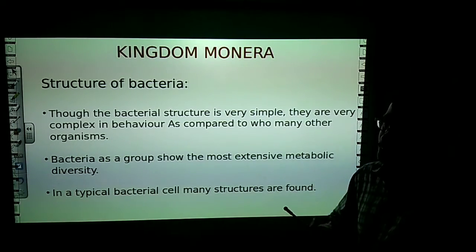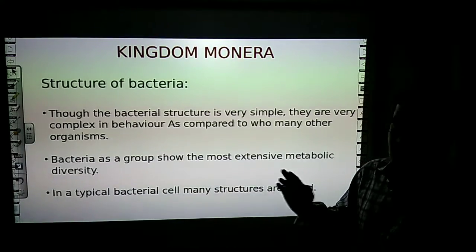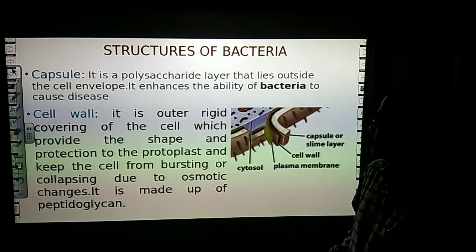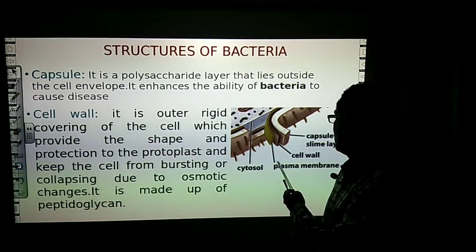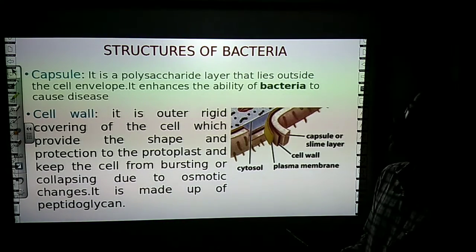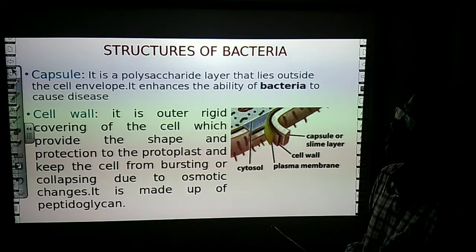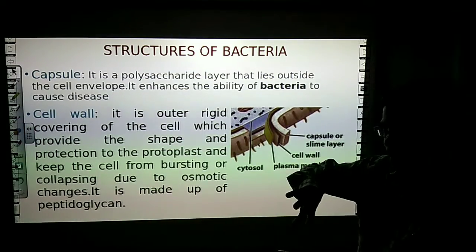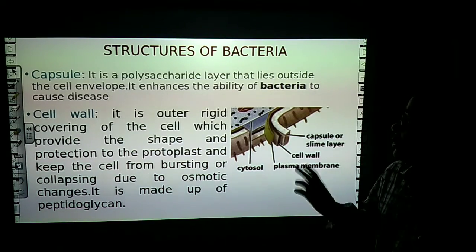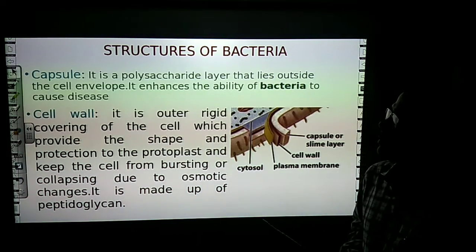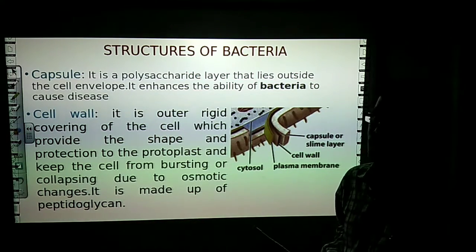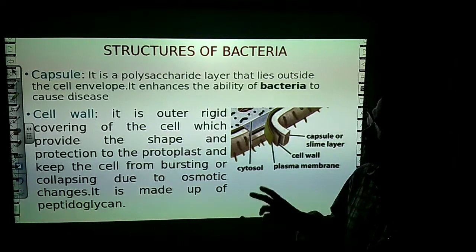In a typical bacterial cell, many structures are found. In a simple common bacterial cell, several layers of structures are present. The outermost layer found in bacteria is called the capsular slime layer. It is made up of polysaccharides and lies outside of the cell envelope. This capsule enhances the ability of bacteria to cause disease.